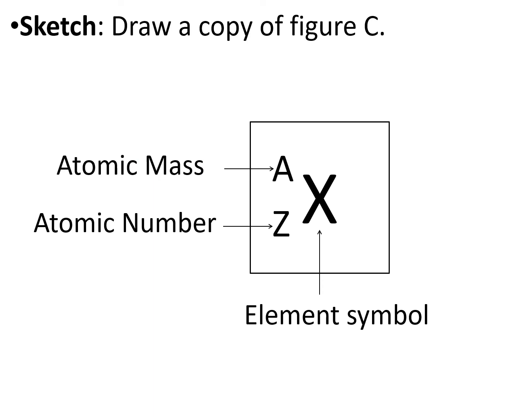Next I'd like to sketch a copy of this. This is an element tile. This is what you will see on the periodic table. With the element symbol X, the atomic mass A and the atomic number Z. In the next slide you'll see an example of this.